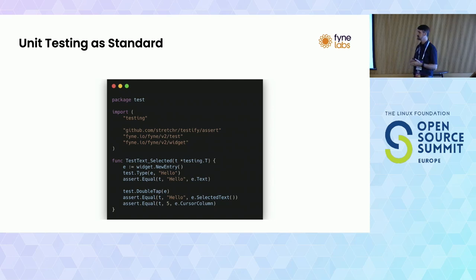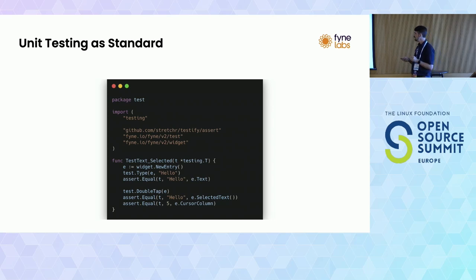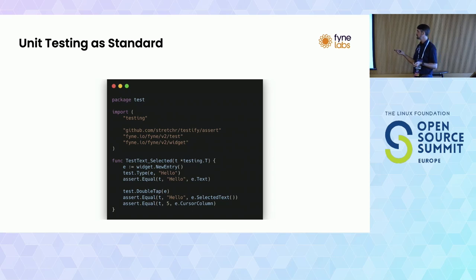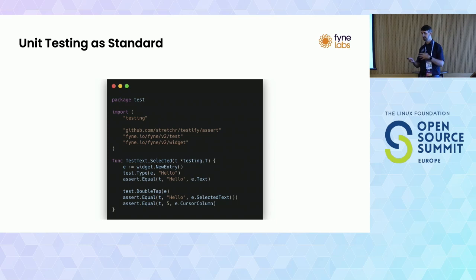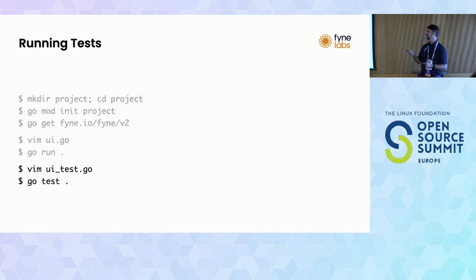Then we can do a little bit more: the user is now going to double-tap on the entry. The text should be selected because they've indicated they want the current word. We assert that the selected text is now 'hello', and we can also check that the cursor moved to the end of the word by verifying that 5 is now the cursor column. This clearly validates certain behaviors coded into this entry widget, and this test can be run using the standard Go tools with go test.